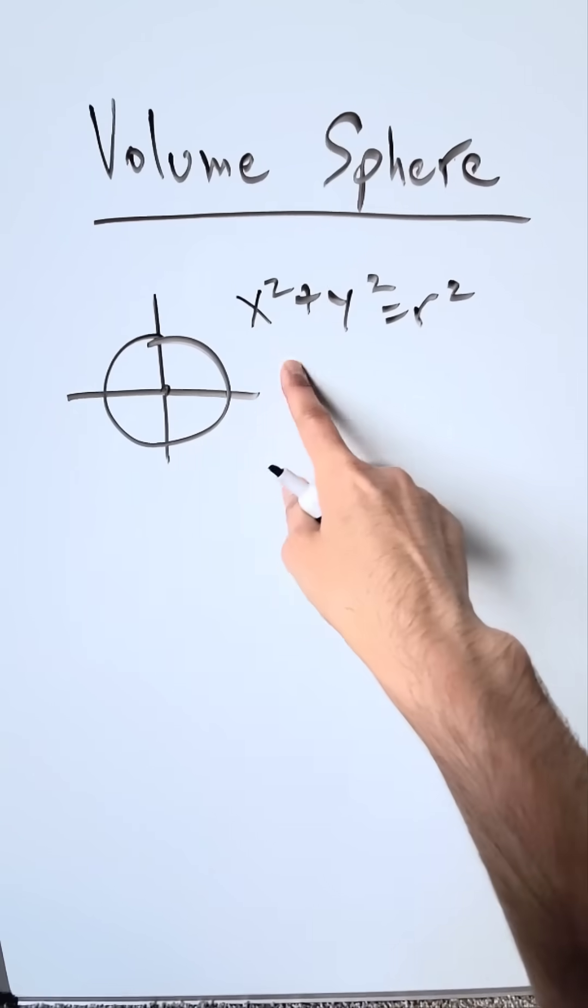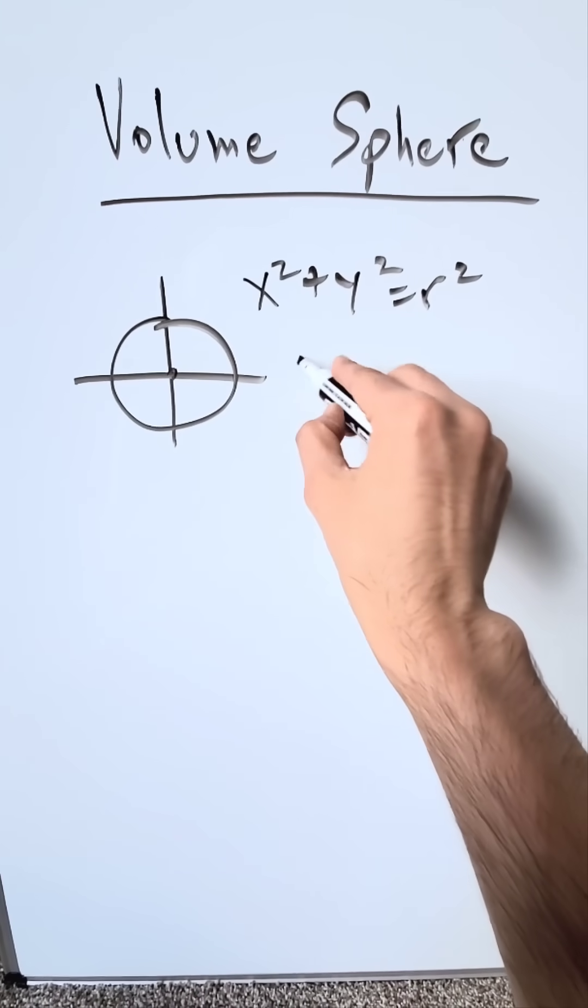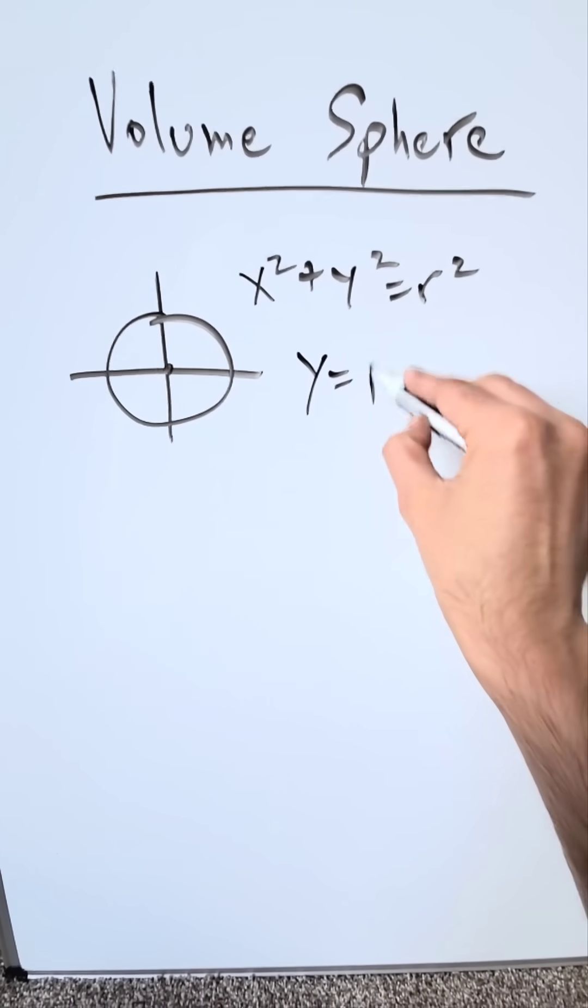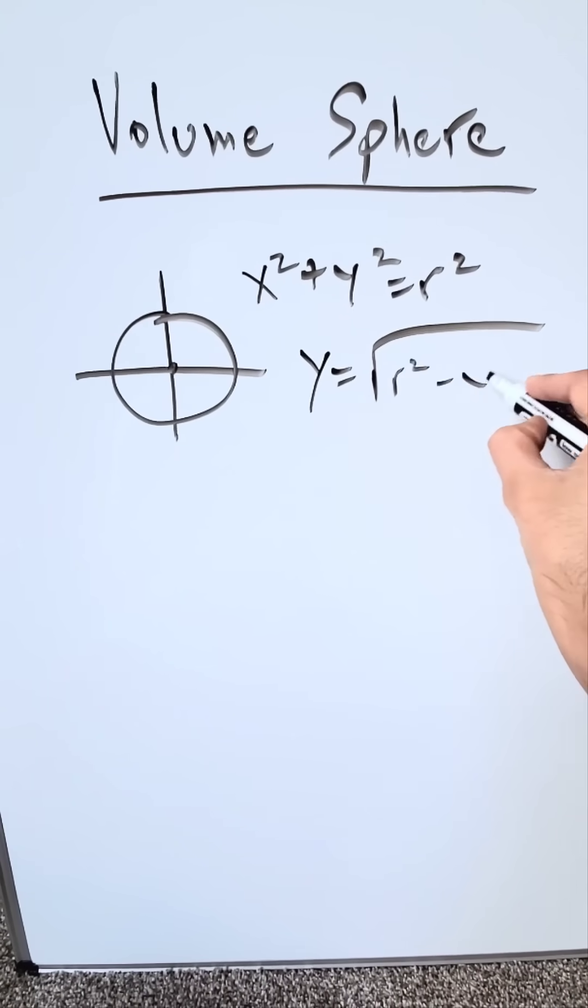Start here with the unit circle x squared plus y squared equals r squared, a certain radius centered on the origin. Solve for y because we need a function. You push everything on the other side and take the square root, you'll have square root of r squared minus x squared.